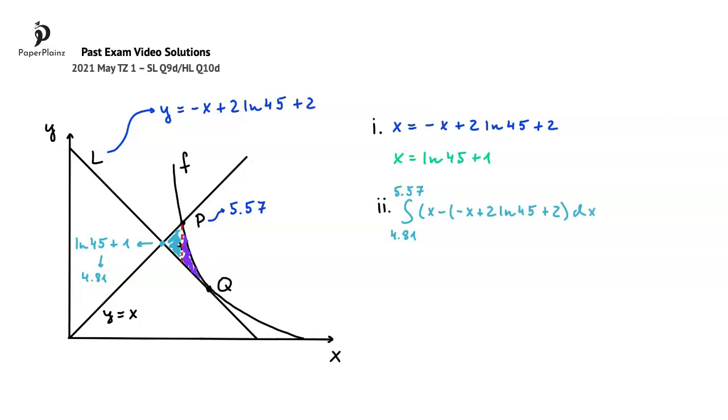This integral represents the light blue area. To this, we have to add an integral that represents the purple area. The lower bound of our integral here is the x-coordinate of P, so 5.57, while the upper bound is the x-coordinate of Q, which in question part B we found to be 2 ln 45 plus 2. Typing 2 ln 45 plus 2 into our calculator and pressing enter, we get 7.61. This is the upper limit, or upper bound, of our integral.